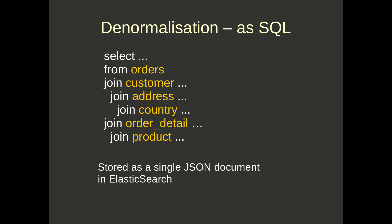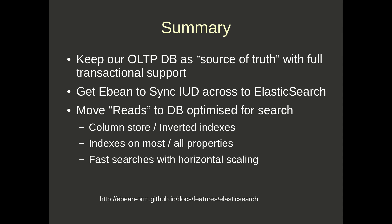At this level of denormalization we're getting quite a difference: a single document access in Elasticsearch brings all that information versus doing five joins. As a summary: we keep our OLTP database as the source of truth with full transactional support; eBean syncs the insert, update, delete across to Elasticsearch; and with that we can move read load to Elasticsearch, which is optimized for search with a column store approach, inverted indexes, more indexes on most or all properties, and combined indexes — giving us fast searches with horizontal scaling.